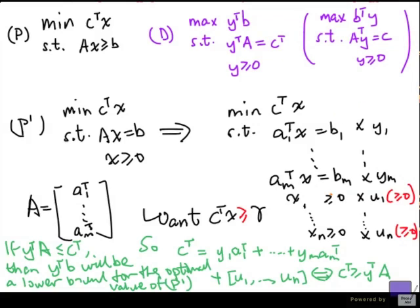Because the inequality that we get, taking the linear combination y1 up to ym with this u, will give us an inequality that says y transpose x greater than or equal to y transpose b.